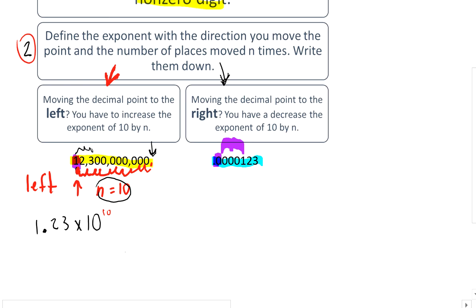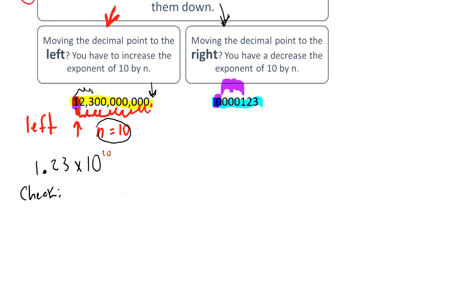How you can check is trying to work your way back. If your notation is correct, then let me write it here: 1.23 times 10 to the 10th power. Now remember that the trick when you multiply by a power of 10 is that you're going to move that point towards the right, and you have a positive exponent, and you're going to move it the number of times that the exponent has.